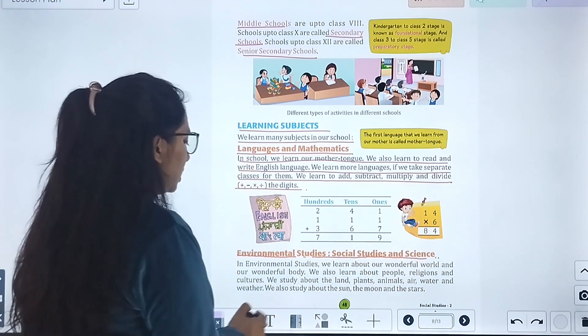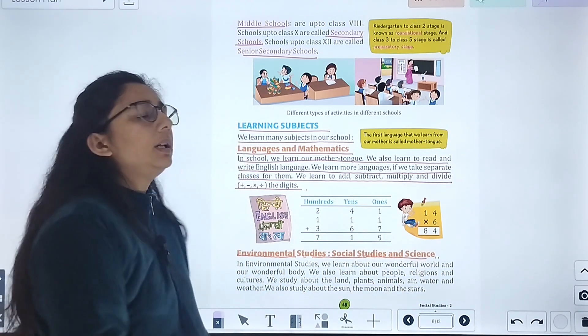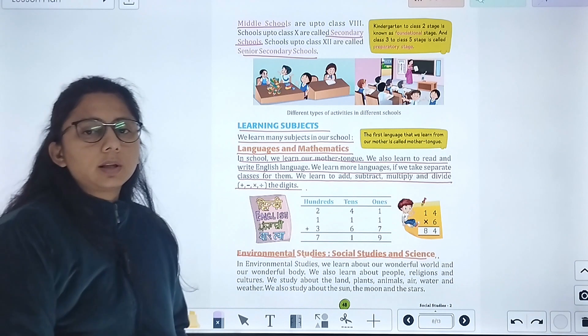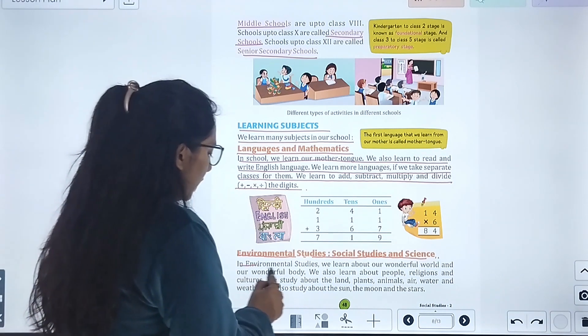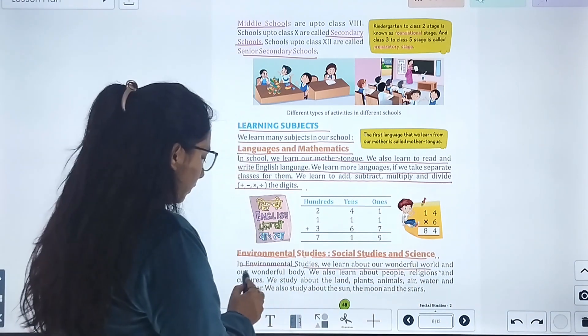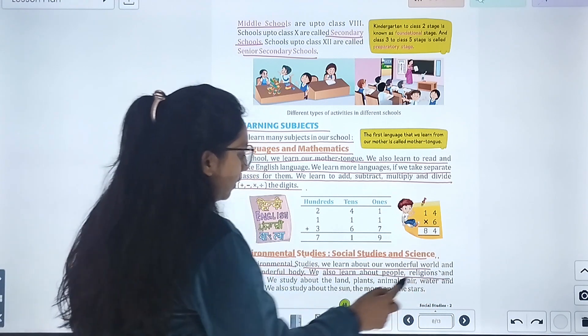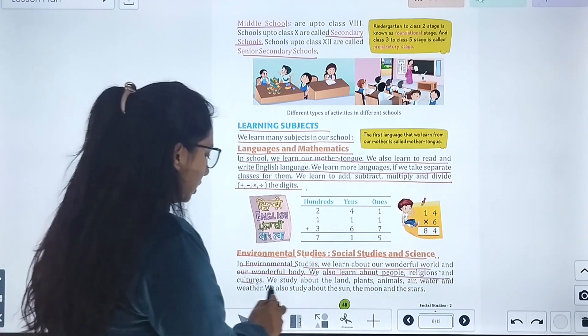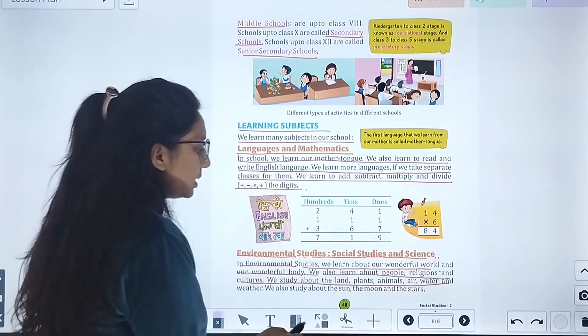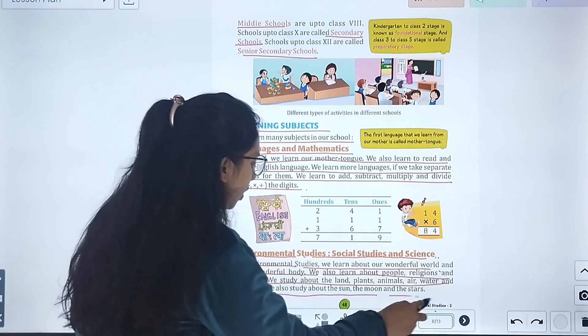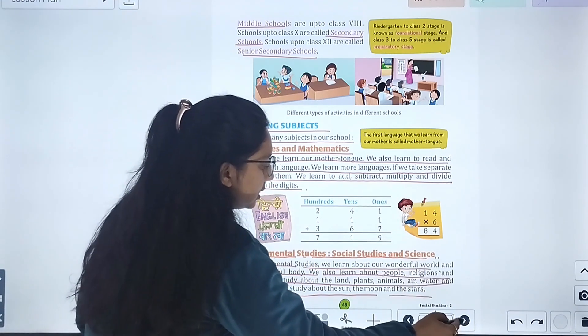There are different subjects: environmental studies and social studies. In science we learn about the wonderful world and the wonderful body. We also learn about people, religion, and culture. We study about land, plants, animals, and weather. We also study about the sun, moon, and stars.